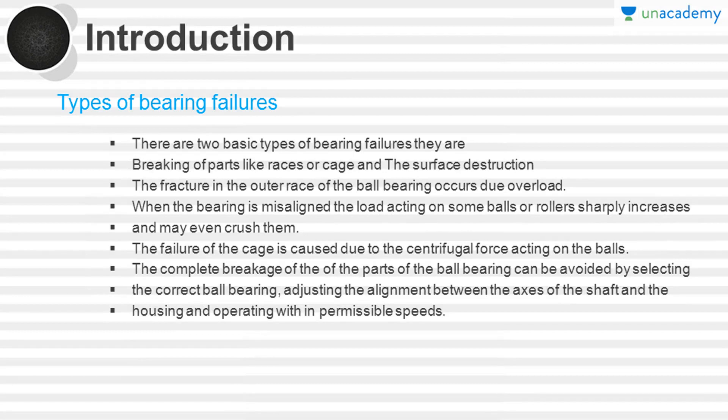Let's talk about the types of bearing failures. There are two basic types of bearing failures: breaking of parts, such as races or cages, and surface destruction. The breaking of parts also includes the balls in the bearing. However, only races and cages are specifically mentioned here because the balls in the bearing can be replaced.